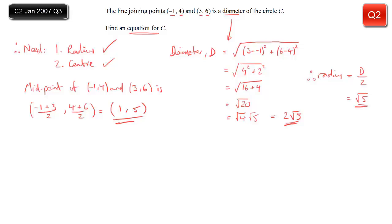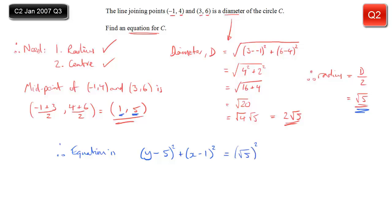Now we can write the equation in standard form. It's going to be x minus 1 squared plus y minus 5 squared equal to the radius squared. The radius is root 5, and root 5 squared is simply 5. So the equation is x minus 1 squared plus y minus 5 squared equals 5.